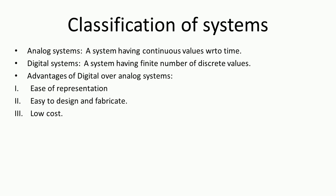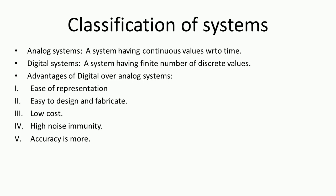Regarding low cost: for digital systems, we first write the code, check its correctness, and then implement or map it to hardware. If there is a problem, we can check the algorithm, identify the error, and correct it — making the overall process low cost. Fourth, digital systems have high noise immunity since they have only two levels, zero or one, and can resist high noise in signals. Fifth, the accuracy of digital systems is more, because the output is again in the form of zero or one, making it easy to predict — unlike analog systems where measuring on a CRO may introduce uncertainty.